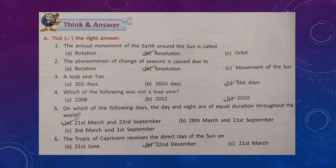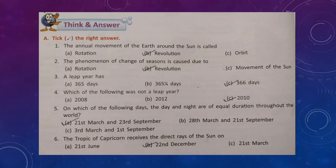We now come to the exercises. Section A: tick the right answer. Question 1: the annual movement of the earth around the sun is called — answer B, revolution. Question 2: the change of seasons is caused due to — answer B, revolution again. Question 3: a leap year has — answer C, 366 days. Question 4: which of the following was not a leap year — answer C, 2010. Question 5: on which day are day and night of equal duration throughout the world — answer A, 21st March and 23rd September.